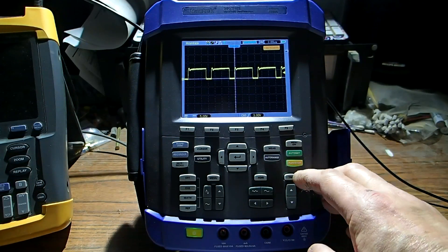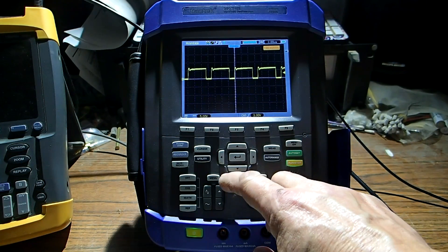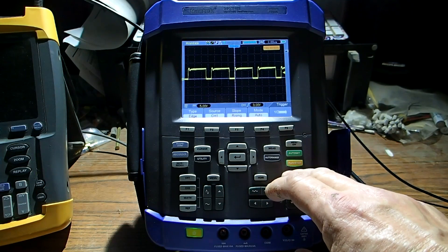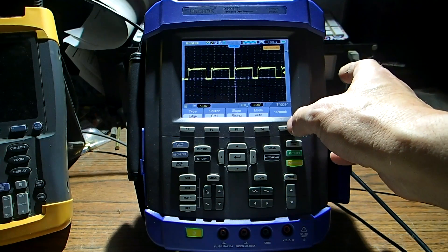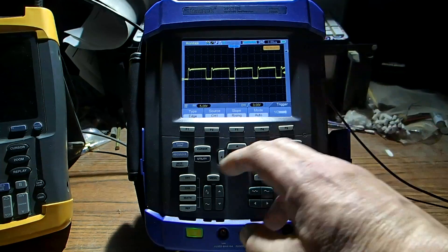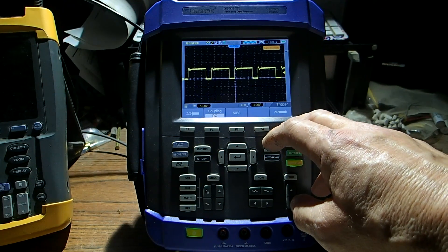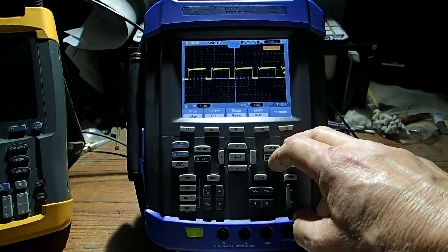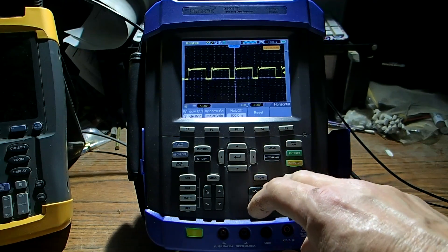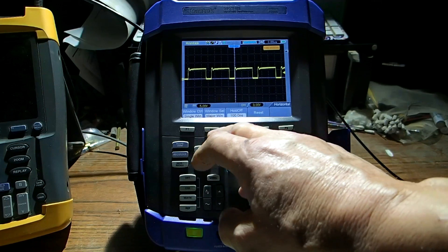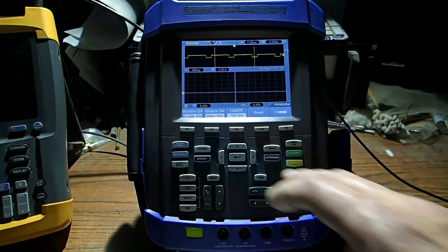Under each and every one of these buttons the trigger, the horizontal, and the menu, you got like a little option of selections there. And so if we go to horizontal, it'll give us this here, window selection. We can actually double window.